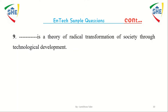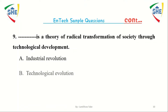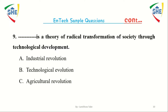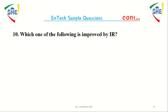Dash is a theory of radical transformation of society through technological development. Which one of the following is improved by industrial revolutions?